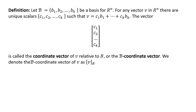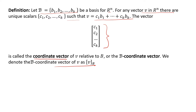Here's the definition to wrap it up. If we have a basis — which must be linearly independent and ordered — then for any vector in Rn where we have a basis, there exist unique scalars that are the coefficients for our linear combination. Put them together into a vector, and it's called the coordinate vector of V relative to B. That's the notation we use.